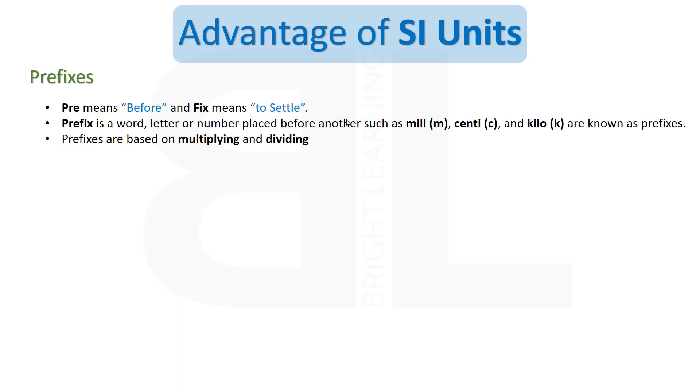Prefix is made up of two words: Pre means before and Fix means to settle. A prefix is a word, letter or number that is placed before another, such as milli, centi and kilo. These are known as prefixes.